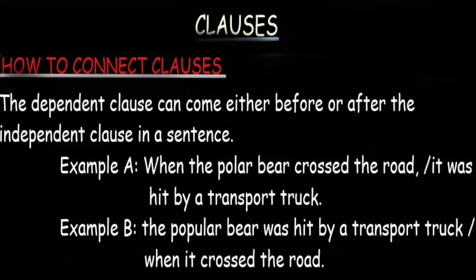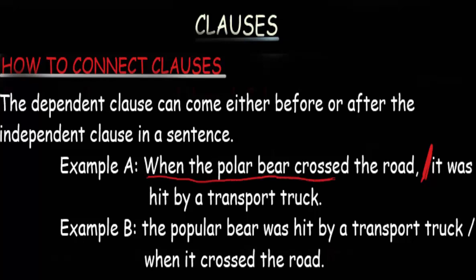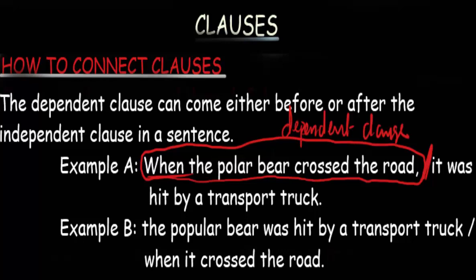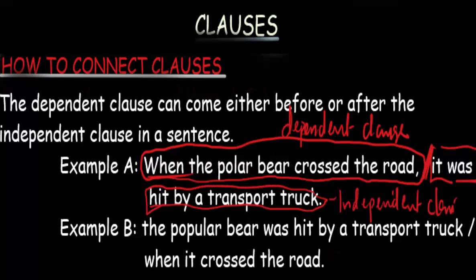The dependent clause can come either before or after the independent clause in a sentence. For example: 'When the polar bear crossed the road, it was hit by a transport truck.' Here, 'when the polar bear crossed the road' is the dependent clause, and 'it was hit by a transport truck' is the independent clause.